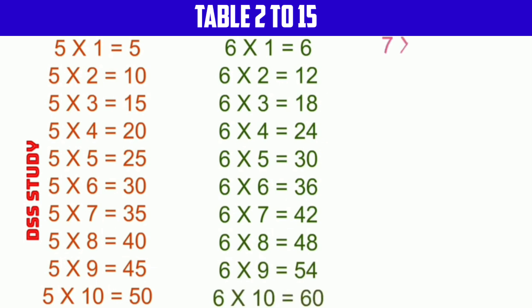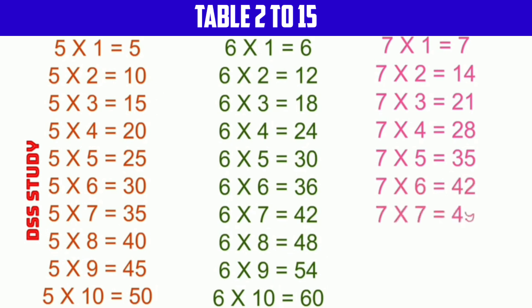7 times 1 is 7, 7 times 2 is 14, 7 times 3 is 21, 7 times 4 is 28, 7 times 5 is 35, 7 times 6 is 42, 7 times 7 is 49, 7 times 8 is 56, 7 times 9 is 63, 7 times 10 is 70.